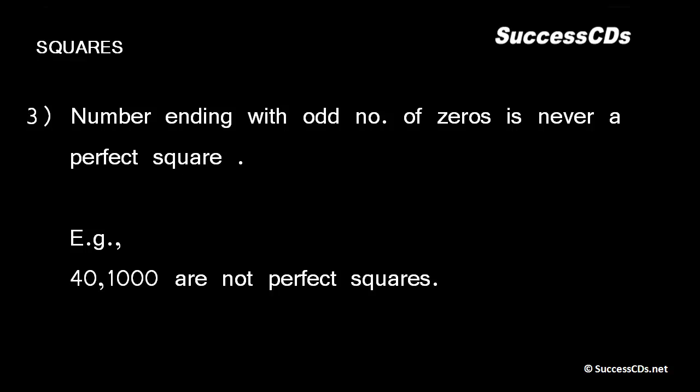A number ending with an odd number of zeros is never a perfect square. For example, number 40 has only 1 zero and is not a perfect square. Number 1000 has 3 zeros and is not a perfect square.